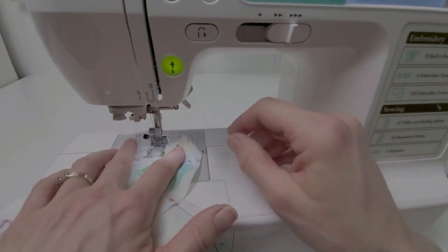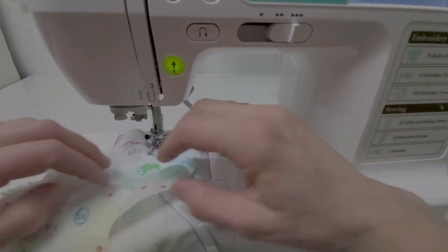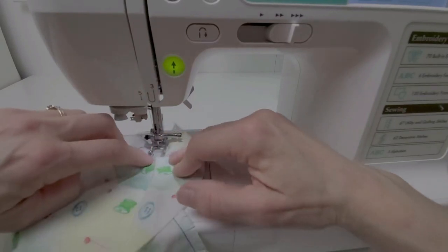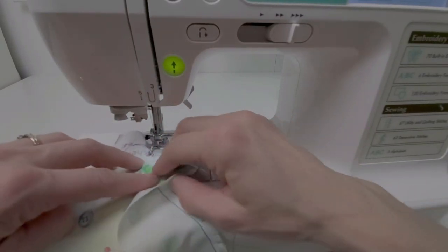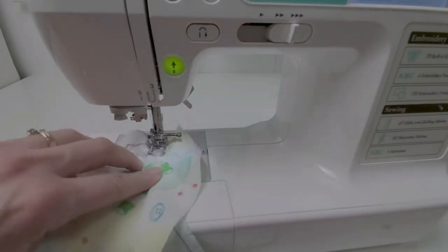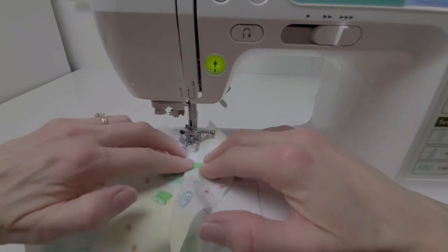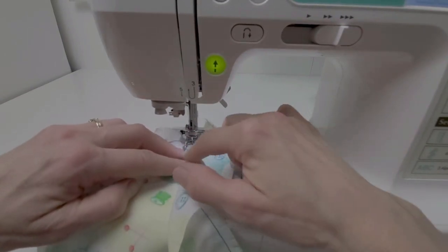Now my job is to open these two out so that that seam is right in the middle. I can't let there be any extra folding in here. I really need that open all the way out, so opening like this as I go and always making sure I can see and feel the seam allowance coming out to my right.